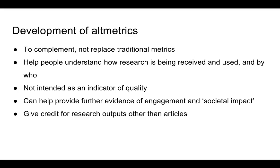It's not intended as an indicator of quality. Some people may see it as an indicator of quality — the higher the altmetrics score, the better the research is. But the same can be applied to citations: a higher citation count does not necessarily mean a paper is better than one with fewer citations. But it can help provide further evidence of engagement and societal impact, and it can find researchers credit for research outputs other than articles.